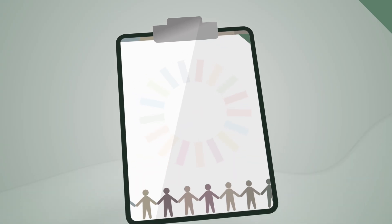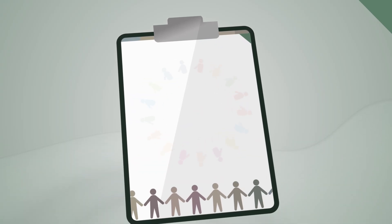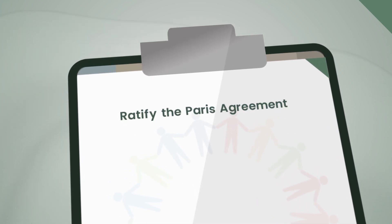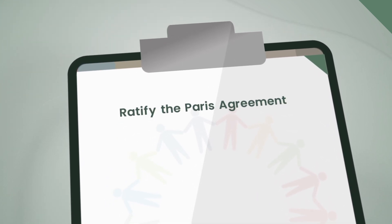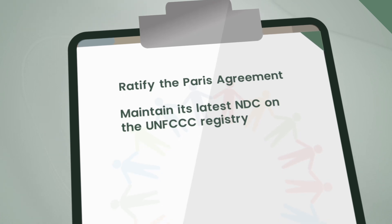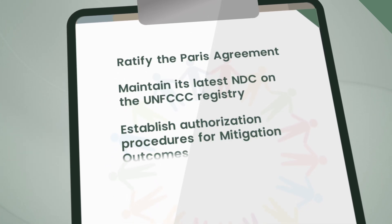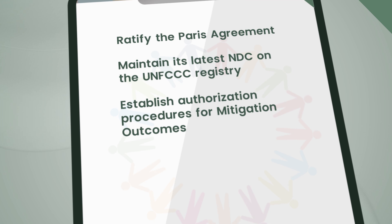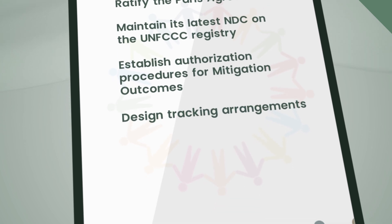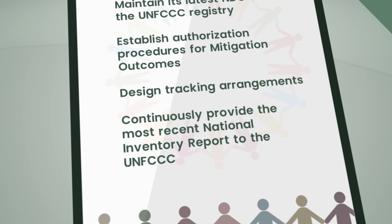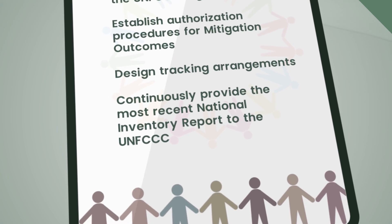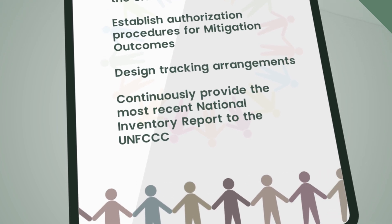For a country to participate in Article 6, it must, among other things, ratify the Paris Agreement, maintain its latest NDC on the UNFCCC Registry, establish authorization procedures for mitigation outcomes, design tracking arrangements, and continuously provide the most recent National Inventory Report to the UNFCCC.